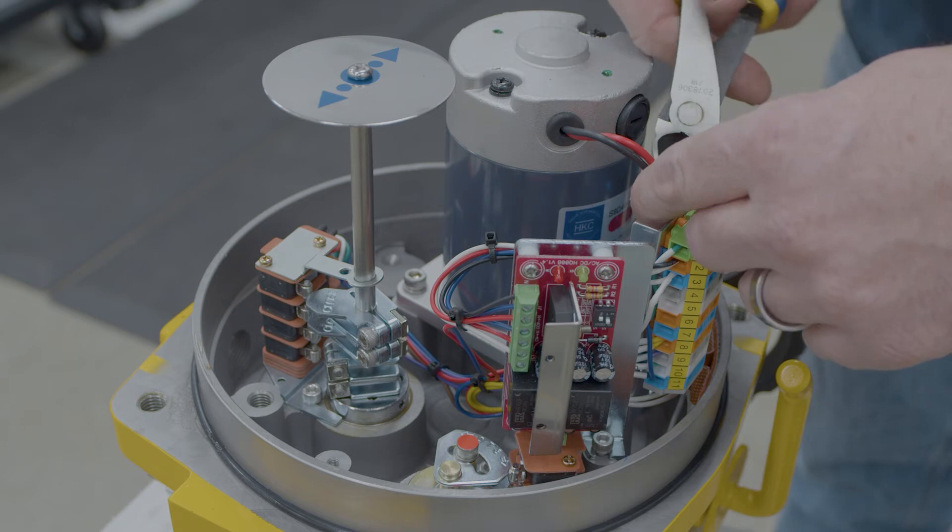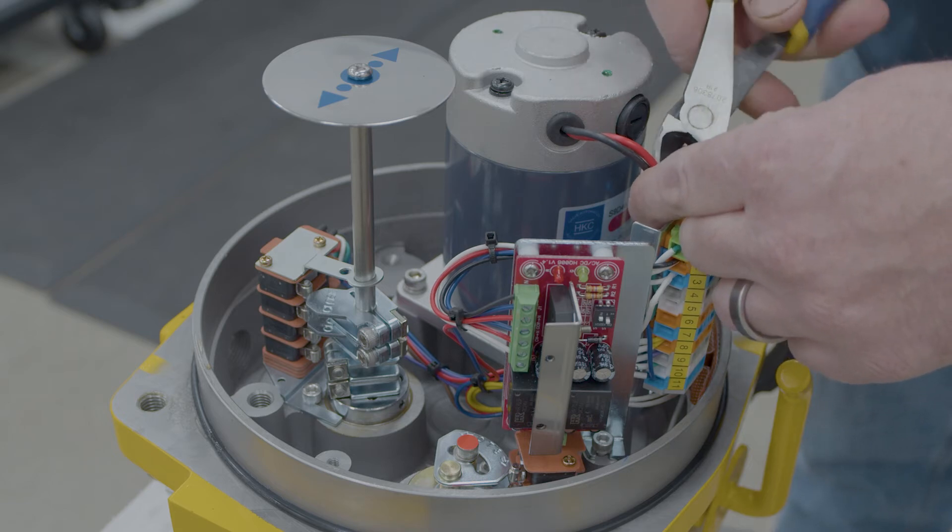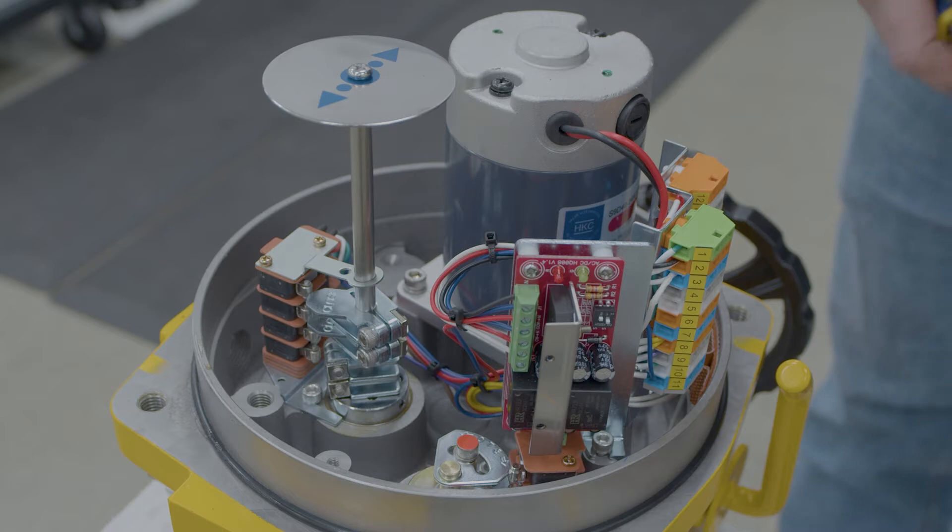Alright, so the first thing we need to do to remove the internal strip is cut the wire tie off that holds the motor leads to the bracket.